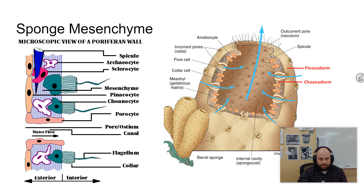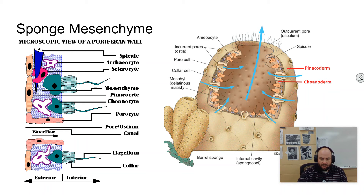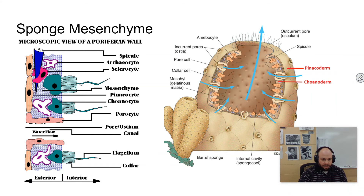Here is a cross section of a sponge wall. You have the mesenchyme — also called mesophyll or mesohyl — which is a gelatinous, extracellular matrix. The skeletal parts, spongin fibers, and spicules are all found embedded in there. The choanocytes have a collar where food is collected and a flagellum that whips around causing water flow to come in.